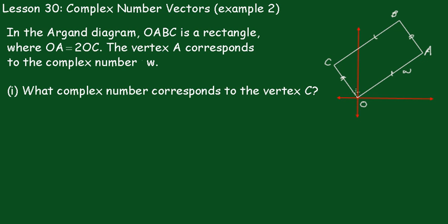Because this is a rectangle, this angle here is 90 degrees. So if we multiplied OA by i, we would rotate it through here. But we'd have to halve the distance. So we can say that the vector OC is equal to a half i W.